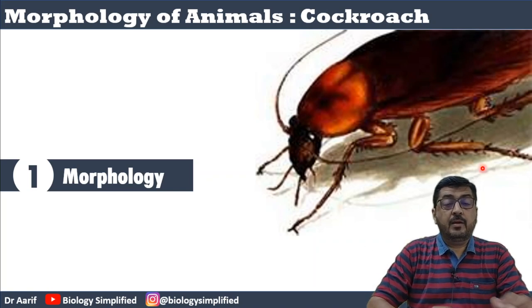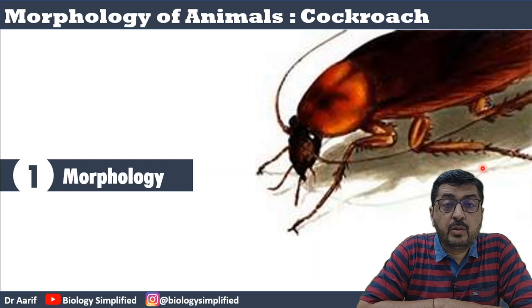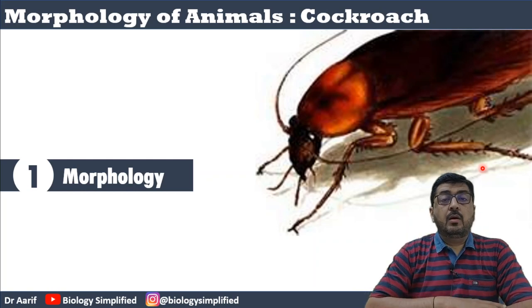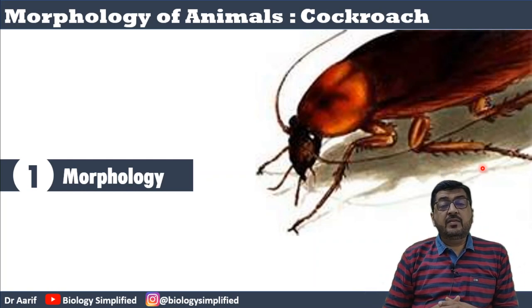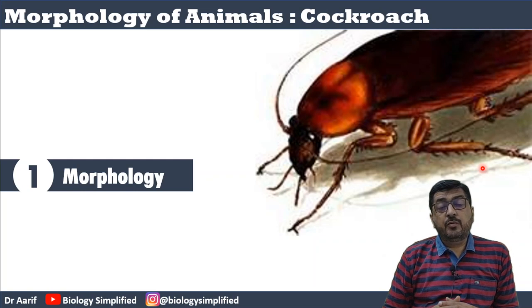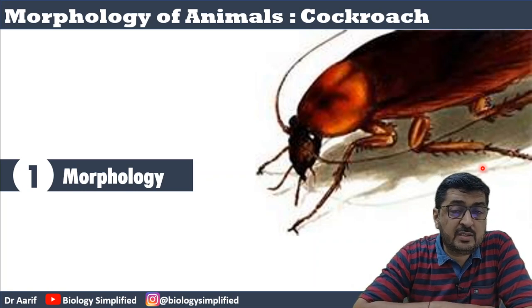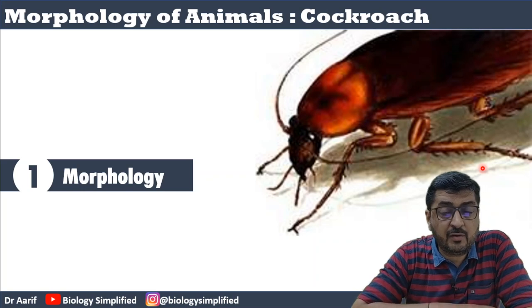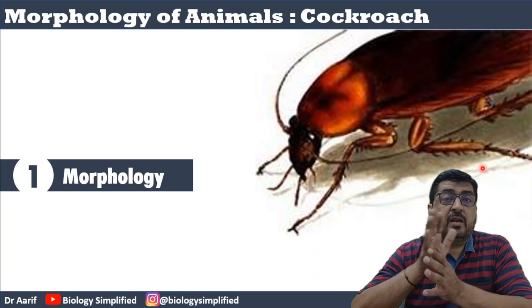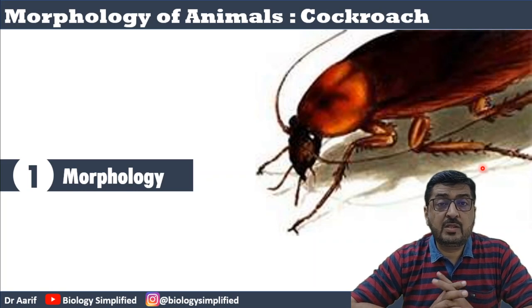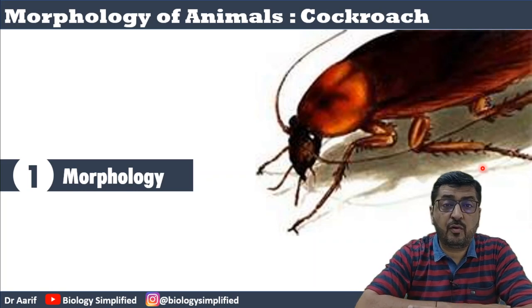Hello everybody. We are starting a new discussion today on morphology of animals. In the 11th standard NCERT, you have Unit 2 which covers structural organization of animals. The first part deals with types of tissues which you have already covered, and the second part deals with the morphology of animals wherein three animal morphologies have been discussed.